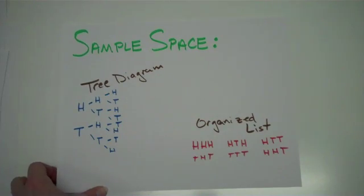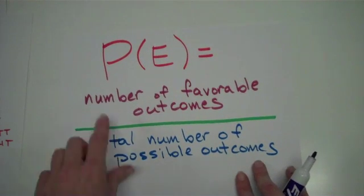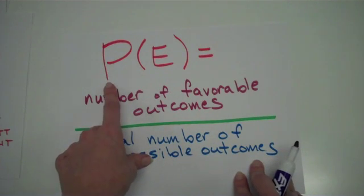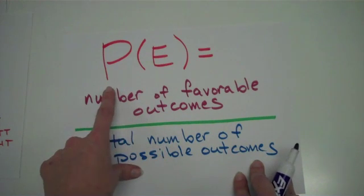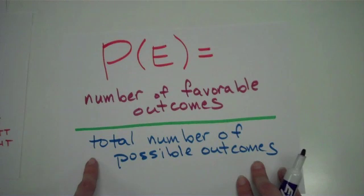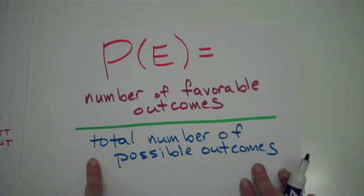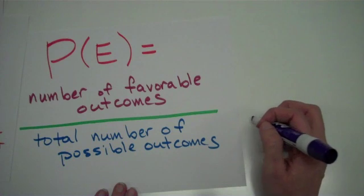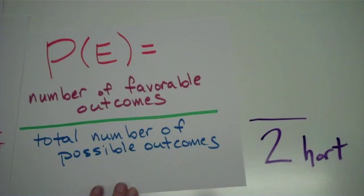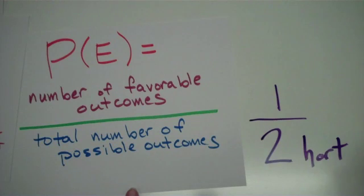Now there is actually a formula to probability. This P, when you're talking about probability, actually means probability. And this E is just standing for event. So this is saying the probability of this happening. To find the probability of something, you're going to take the number of favorable outcomes — which is what you want to happen — and write it as a ratio to the total number of possible outcomes. For example, if you toss a coin, your total outcomes is two, because you can either get heads or tails. But if you say that you want to get heads, the number of favorable outcomes is one, because you're only going to get heads once when you flip the coin. So the probability of getting heads would be one out of two.